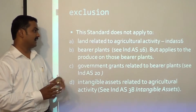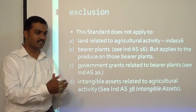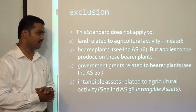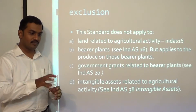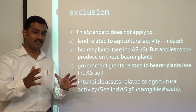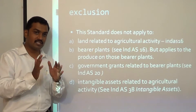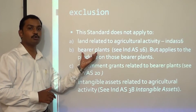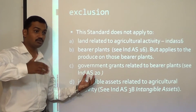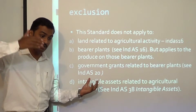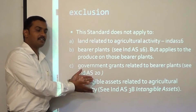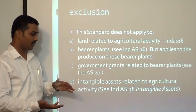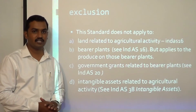Exclusions from the standard: land relating to agricultural activity is covered by IAS 16 as owner-occupied property. Bearer plants — plants grown to produce agricultural produce for more than one year and not to be cut down and sold — are outside this standard's scope. Government grants related to bearer plants are dealt with under IAS 20, applying the same accounting treatment as for depreciable assets. Intangible assets related to agricultural activity are dealt with under IAS 38.